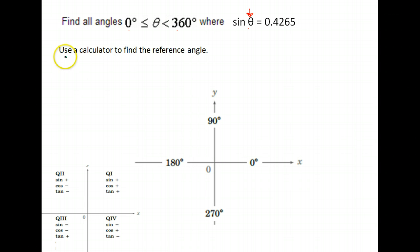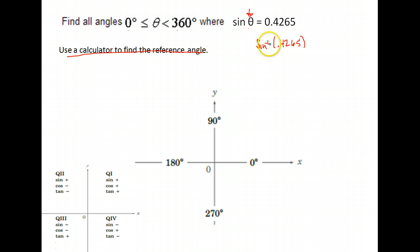Our job is going to be first using a calculator to find the reference angle. What we would do to find that reference angle is use the inverse sine. You should have a button on your calculator that looks something like this, with a sine and a little negative 1. It's usually a second function or inverse — you would have to push your shift or second function button. You'll also want to check that your calculator is in degree mode and not radian mode.